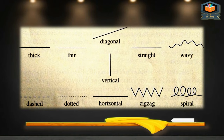Thick line has more thickness; thin line has less. Diagonal line is neither horizontal nor vertical — it moves in a slope. Wavy line is in the form of waves. Dashed line and dotted line are in the form of dashes and dots. You know about horizontal and vertical lines. Zigzag line is in zigzag form and spiral line is in spiral form.